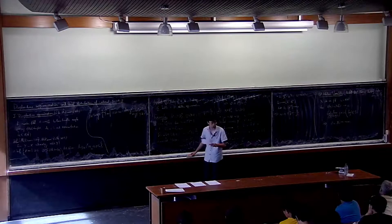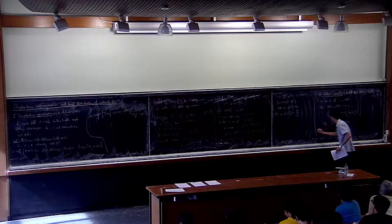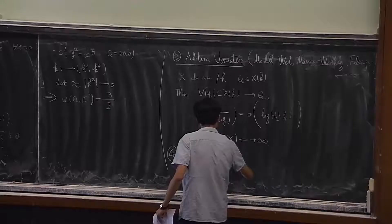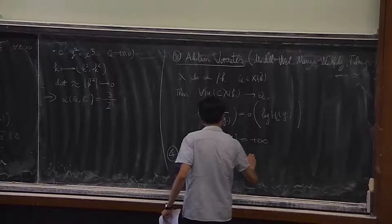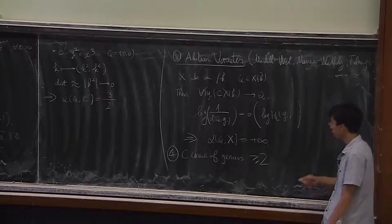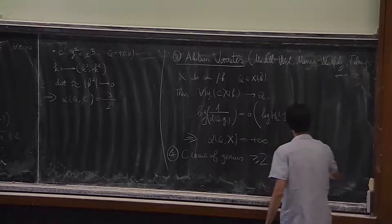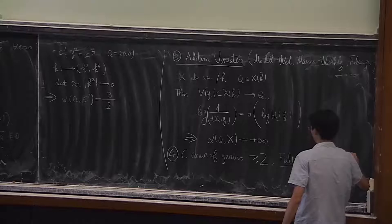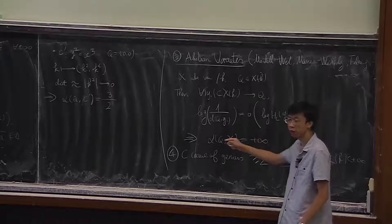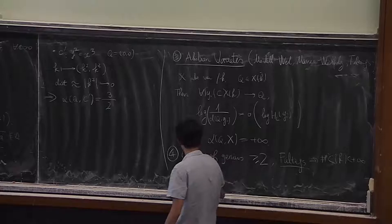A further example: let C be a curve of genus greater than or equal to 2. By the famous theorem of Faltings, over a fixed number field there are only finitely many rational points on C. This means we cannot find any infinite sequence which approximates a fixed point. So in this case we also have the constant is infinite.